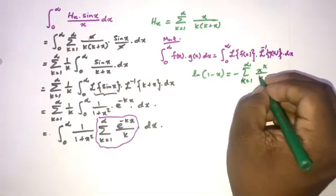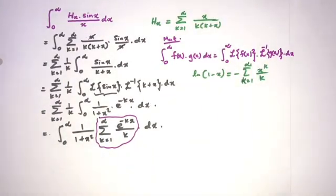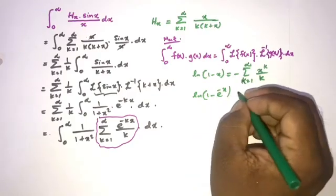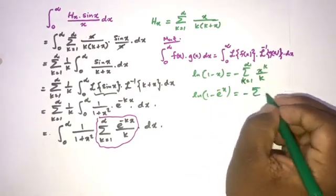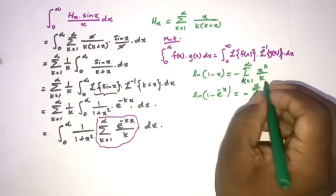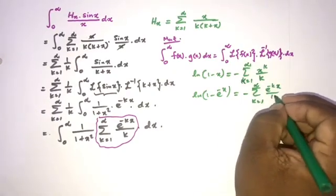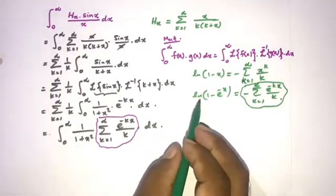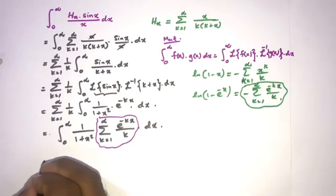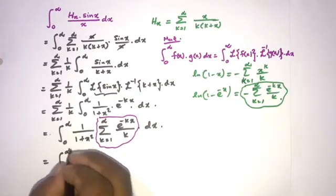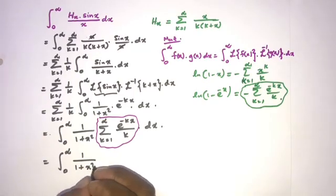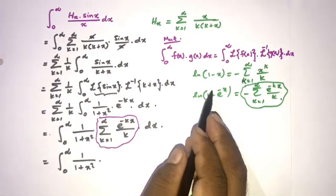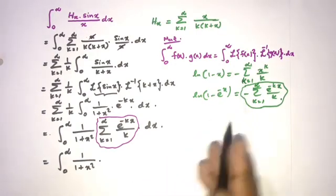If we substitute t equals e^(−x), we get: natural log of (1 minus e^(−x)) equals minus the sum from k equals 1 to infinity of e^(−kx)/k. This matches our series exactly, so the integral becomes: integral from 0 to infinity of 1/(1+x²) times negative natural log of (1 minus e^(−x)) dx, giving us a minus sign in front.